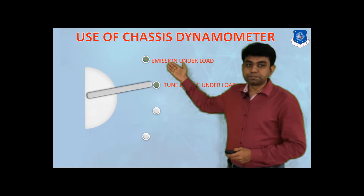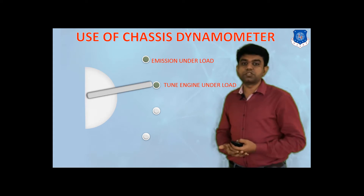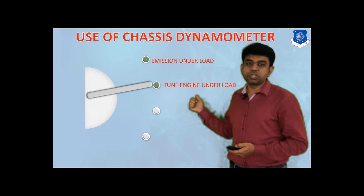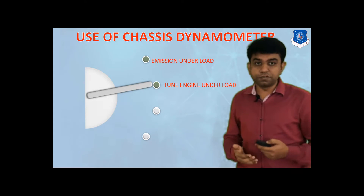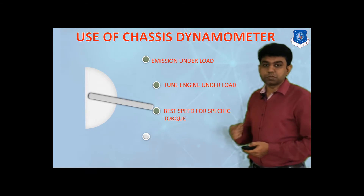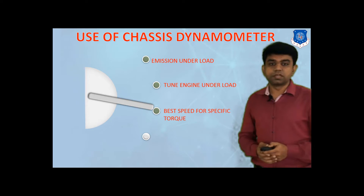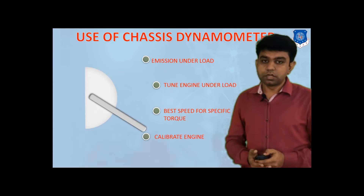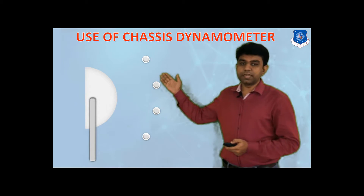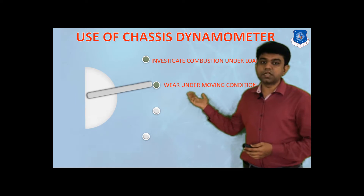The first capability is emission under load — at different load scenarios of the vehicle, how the emission behaves can be checked. Then, tuning the engine under load: whenever you are loading the engine at different conditions, what is the behavior of the engine can be checked. The base speed for specific torque can also be evaluated, giving you a proper graph of speed versus torque. Apart from that, you can easily calibrate the engine, and you can investigate combustion under load.